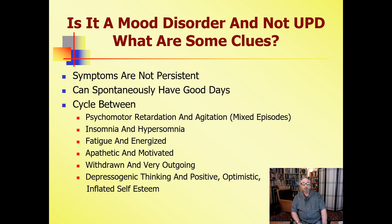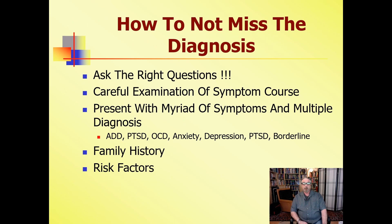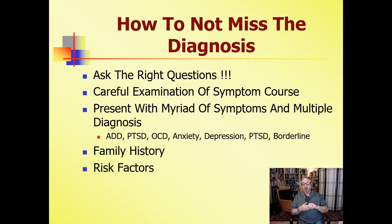Ask the right questions. Carefully examine the course of their symptoms. Do they change in an episode? Do they have days where they're fine? Are they psychomotor-retarded one day and agitated a week later? People who present with a myriad of symptoms and multiple diagnoses — anxiety, depression, OCD, PTSD, attention deficit disorder, borderline personality disorder — when I hear that, the first thing I start thinking is: do they really have an affective disorder? Respect genetics, check family history, check risk factors. If you do those things, you're much less likely to miss the diagnosis.